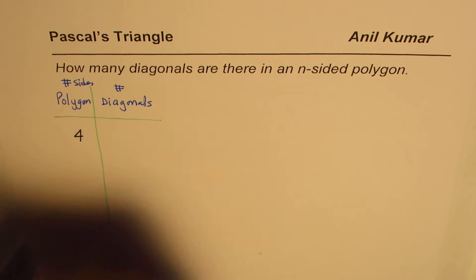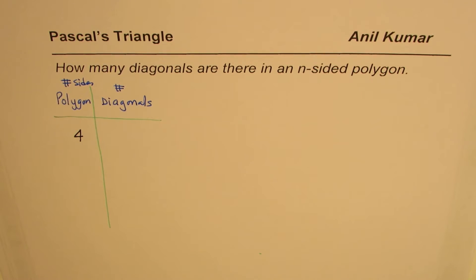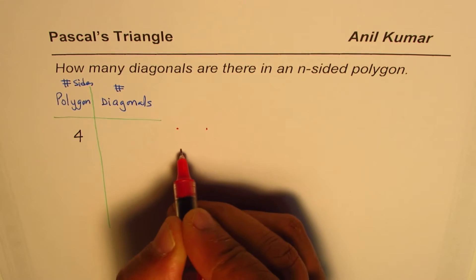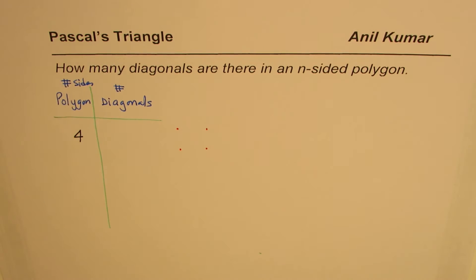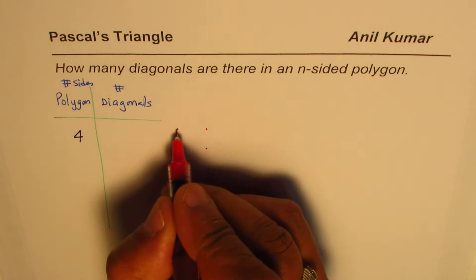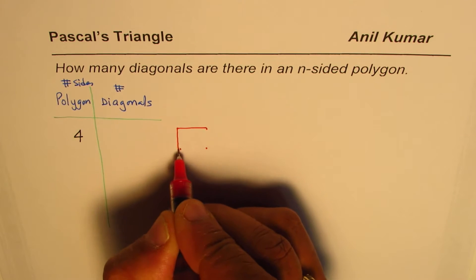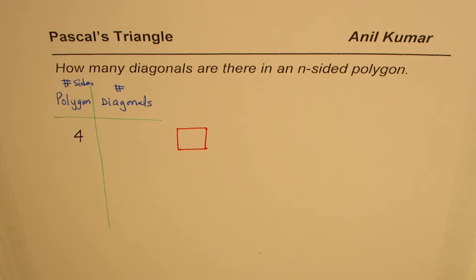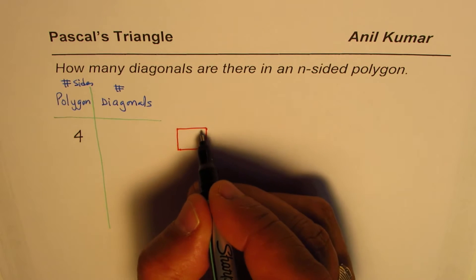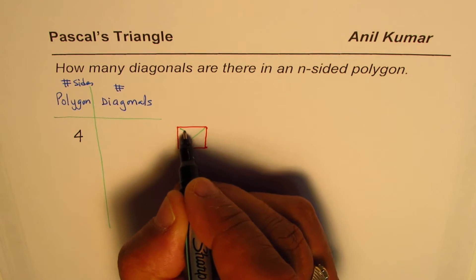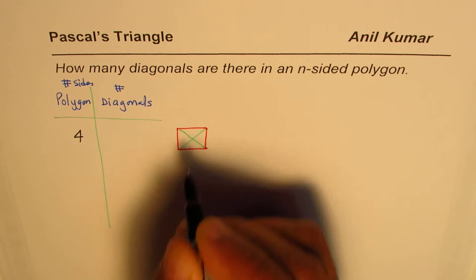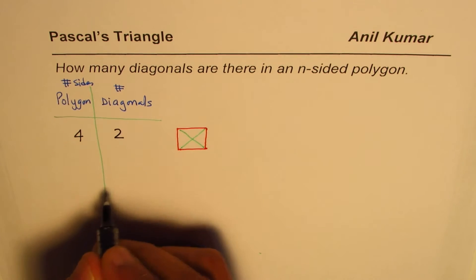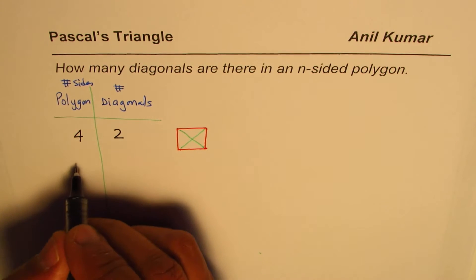If the number of sides is four, how many diagonals do we have? Let's construct the quadrilateral with four sides. We can draw one diagonal and then a second one, so we get two diagonals for a quadrilateral.